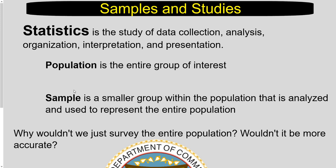Two big vocabulary terms we'll use a lot are population and sample. The population is the entire group you're interested in. For example, if you want to know the average height of a person on the planet, the population would be all human beings. One way to do that would be to line up every person, measure their heights, and find the average. But there are about 7 to 8 billion people — there's no way you could measure them all. It's literally impossible.